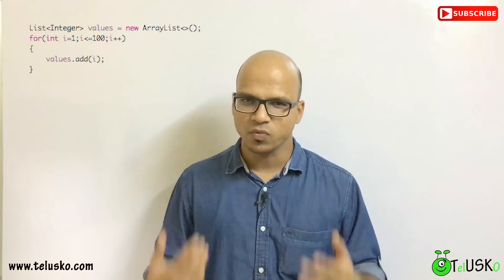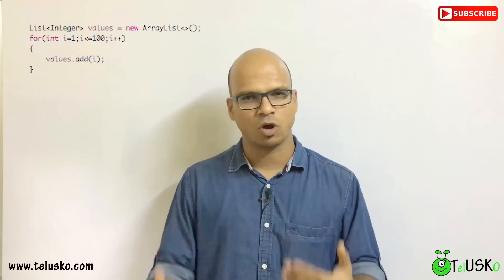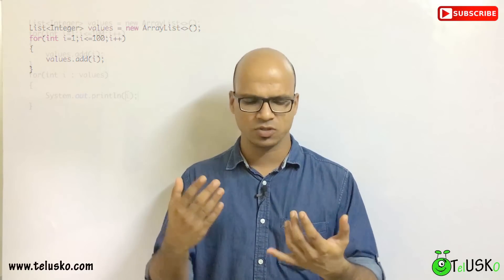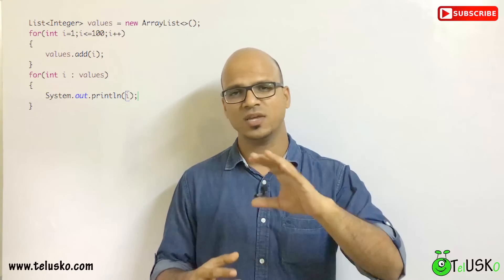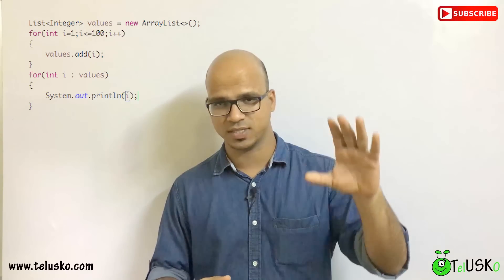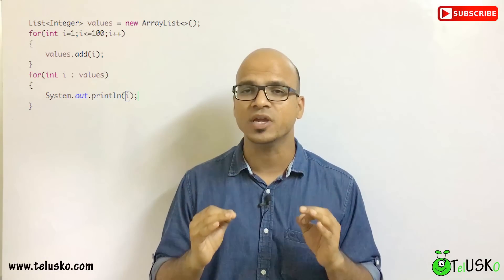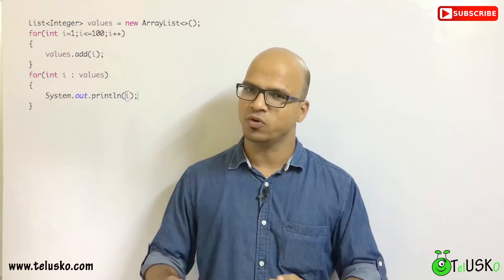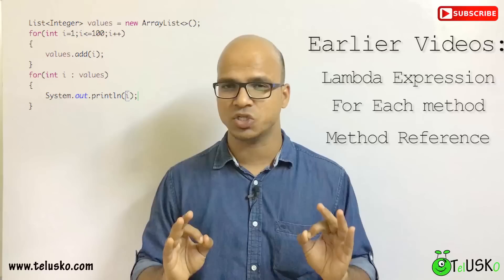Now we want to print all those values. We can use a normal for loop or an enhanced for loop. Using an enhanced for loop, we iterate through the list of 100 values. But if you've seen the earlier lambda expression videos, we also know we can print values using internal iteration.